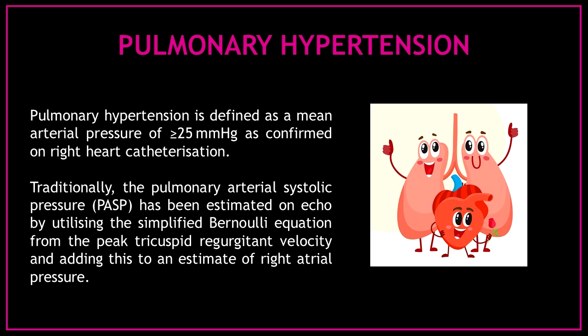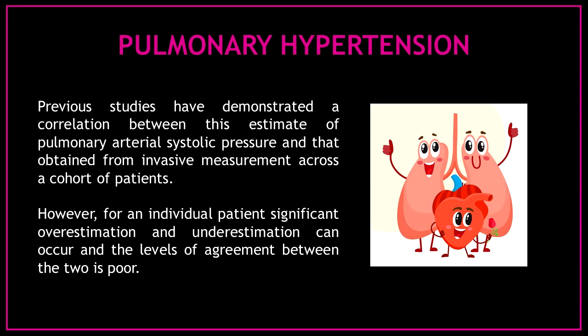So what is pulmonary hypertension? Pulmonary hypertension is defined as a mean arterial pressure of 25 millimeters of mercury as confirmed on right heart catheterization. Traditionally, the pulmonary arterial systolic pressure has been estimated on echo by utilizing the simplified Bernoulli equation from the peak tricuspid regurgitant velocity and adding this to an estimate of right atrial pressure. Previous studies have demonstrated a correlation between this estimate and that obtained from invasive measurement across a cohort of patients. However, for an individual patient, significant overestimation and underestimation can occur and the levels of agreement between the two is poor.